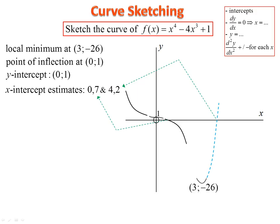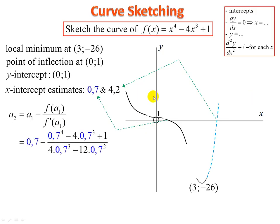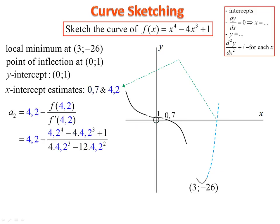Now use Newton's method with estimates 0.7 and 4.2. Substituting 0.7 into the formula gives 0.7 back immediately — that's confirmed. For 4.2, we get 4, not yet converged. Substituting 4 again gives 4, which means 4 is confirmed. So we place x-intercepts at 0.7 and 4.